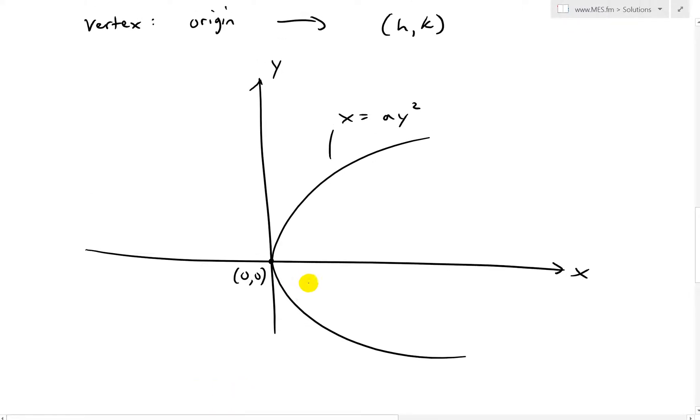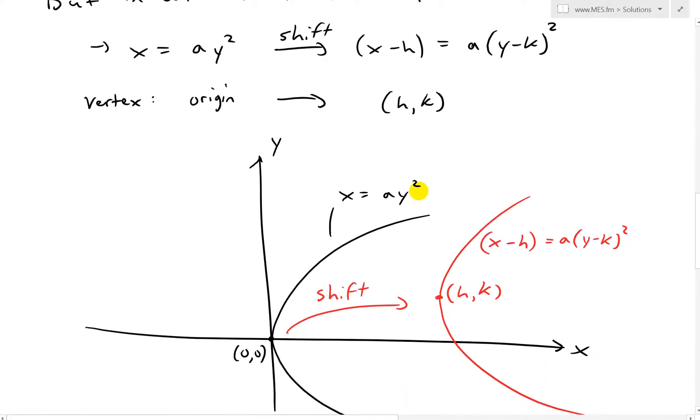And now what would happen is if we were to shift this, this would go somewhere like over here, and I'll draw this in red. Let's just say we would shift this whole thing over to here, or somewhere further away. And now what we have is this new, and it's the exact same thing, it just goes over to it like this. And this is going to be now we're shifting it like this. And now at this point, we'll be h and k as a new vertex here, and then the equation is just going to be now x minus h equals a times y minus k squared.